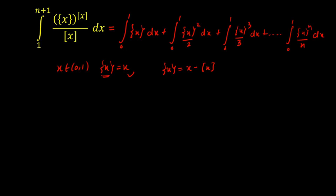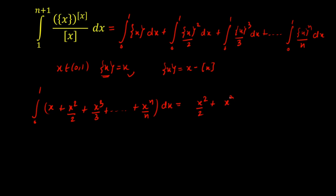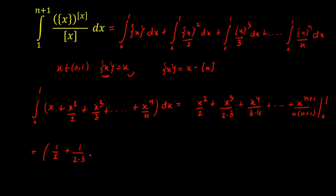Since all limits are from 0 to 1, I can combine them into a single integral from 0 to 1 of (x + x²/2 + x³/3 + ... + x^n/n) dx. Integrating term by term gives [x²/2 + x³/(2·3) + x⁴/(3·4) + ... + x^(n+1)/(n·(n+1))] from 0 to 1. Substituting the upper limit x=1 gives 1/2 + 1/(2·3) + 1/(3·4) + ... + 1/(n·(n+1)). Substituting x=0 gives all zeros, so the final expression is this sum.